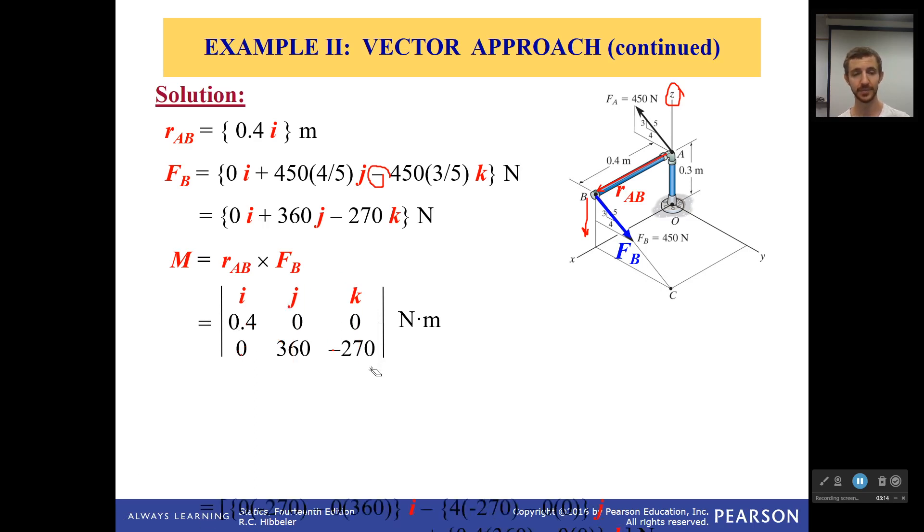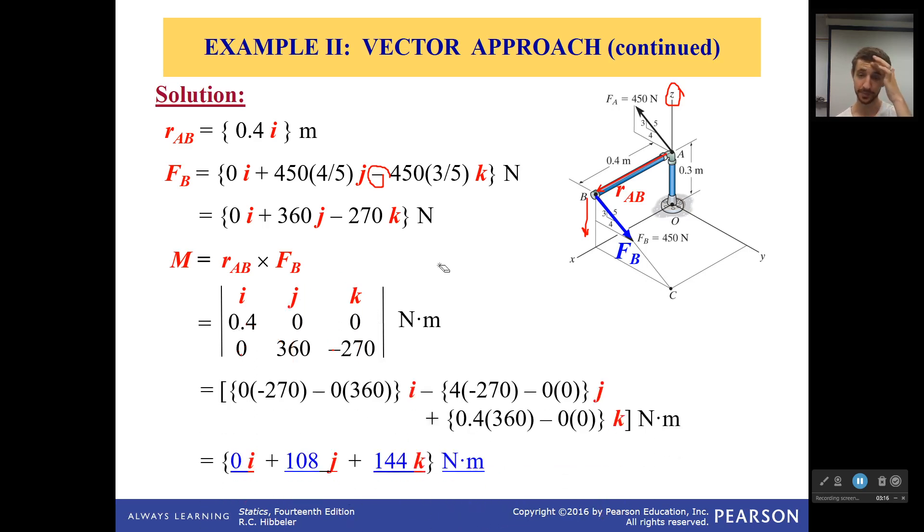That makes a whole lot of sense. So, with that in mind, I add all these together, being very careful that I don't forget that minus sign in front of the j component. And I get the Cartesian components of my couple moment vector. It's 108j, 144k newton meters.